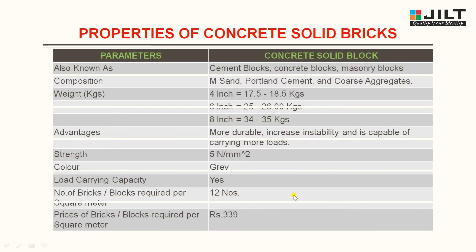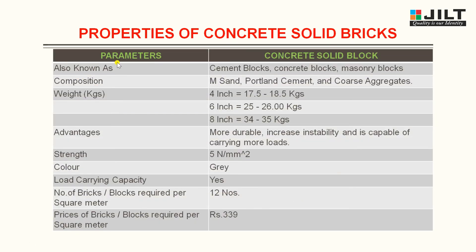Now let us see the parameters of concrete solid blocks. Also known as: cement blocks, concrete blocks, machinery blocks, etc. Composition: sand, Portland cement and coarse aggregate. Weight: 4-inch block is 17.5–18.5 kg; 6-inch block is 25–26 kg; 8-inch block is 34–35 kg. Advantages: more durable, increased stability and capable of carrying more loads. Strength: 5 N/mm². Color: gray. Load carrying capacity: yes. Number of blocks required per square meter: approximately 12. Price per square meter: Rs. 339.